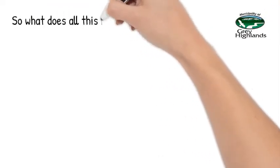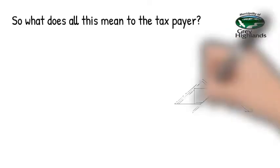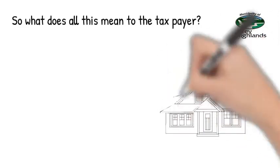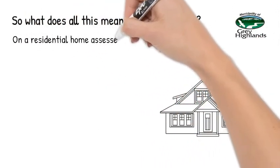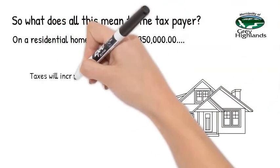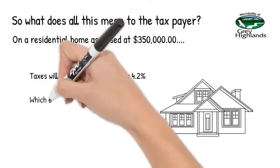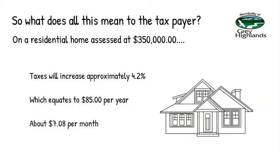So what does this mean for the average taxpayer? On a residential home in Grey Highlands assessed at $350,000, the local tax increase will be approximately 4.2%, about $85 per year or $7.08 per month.